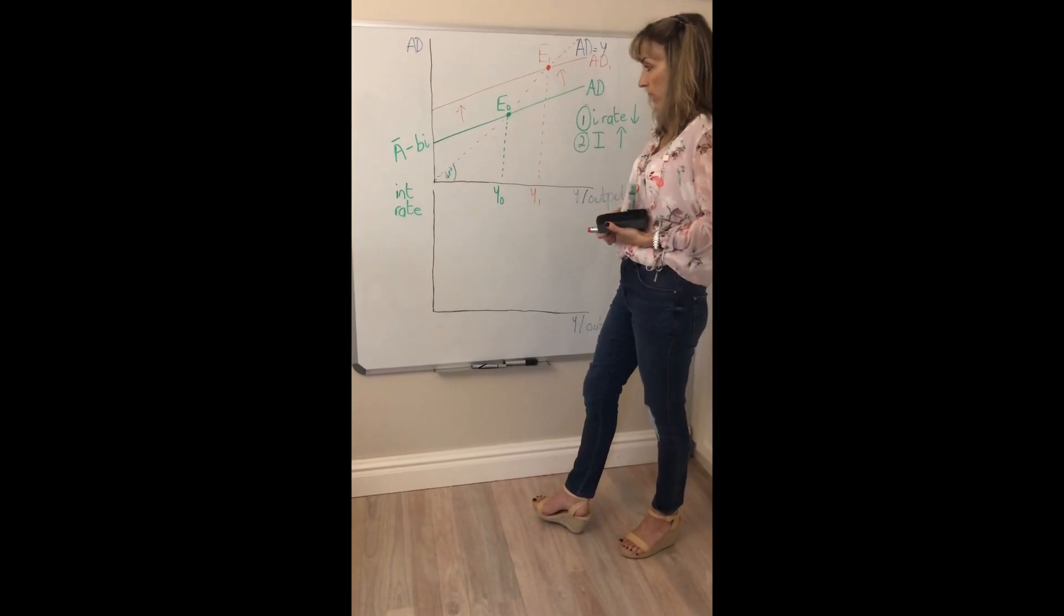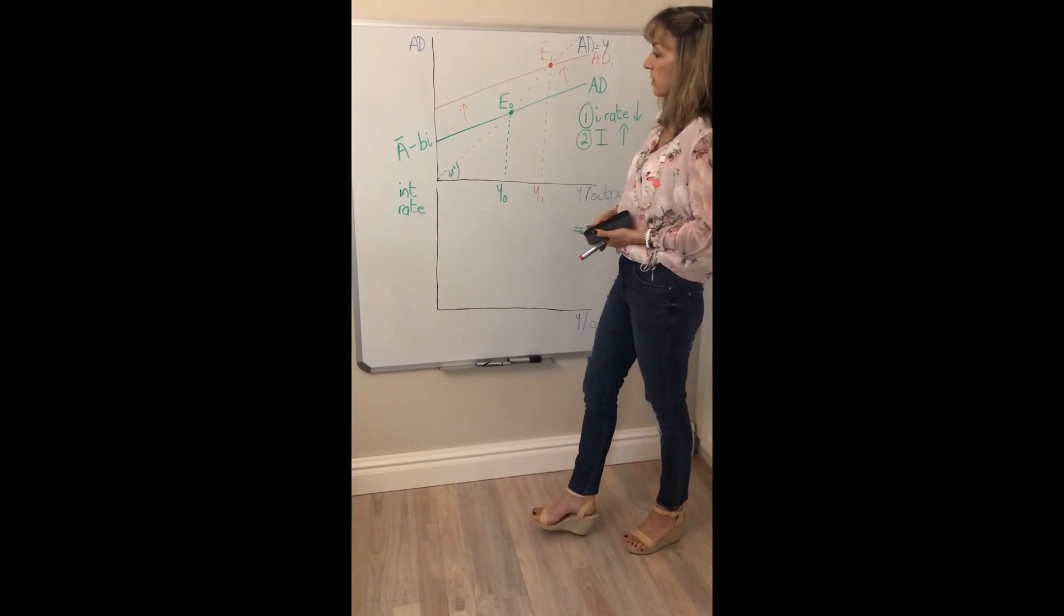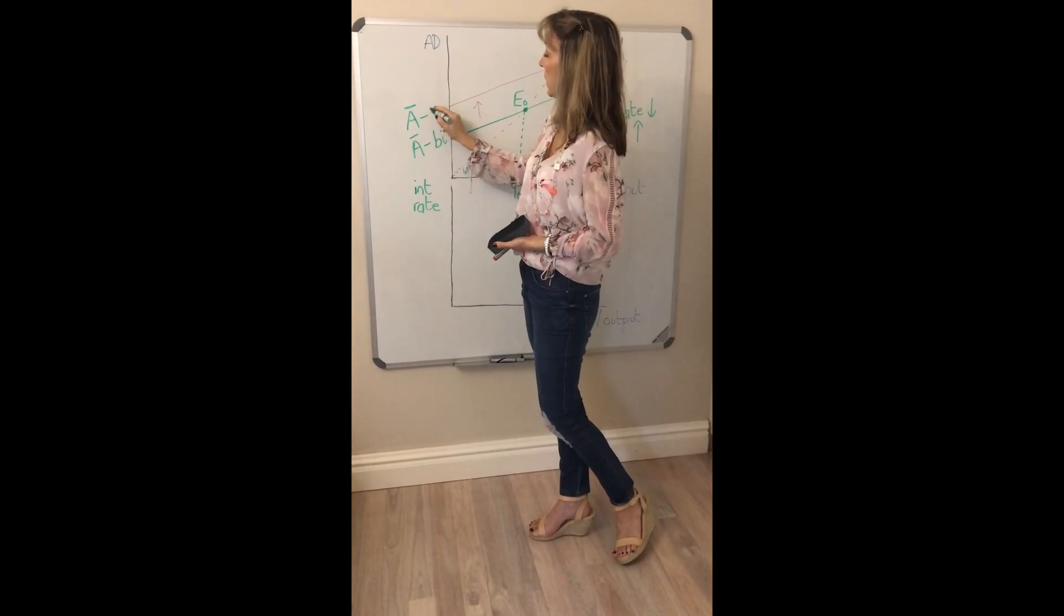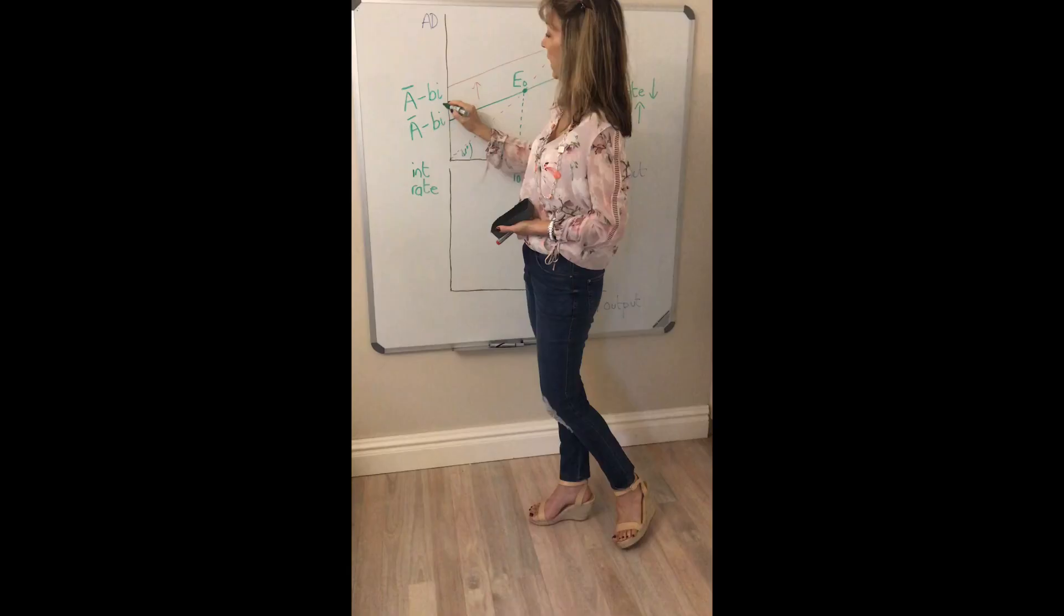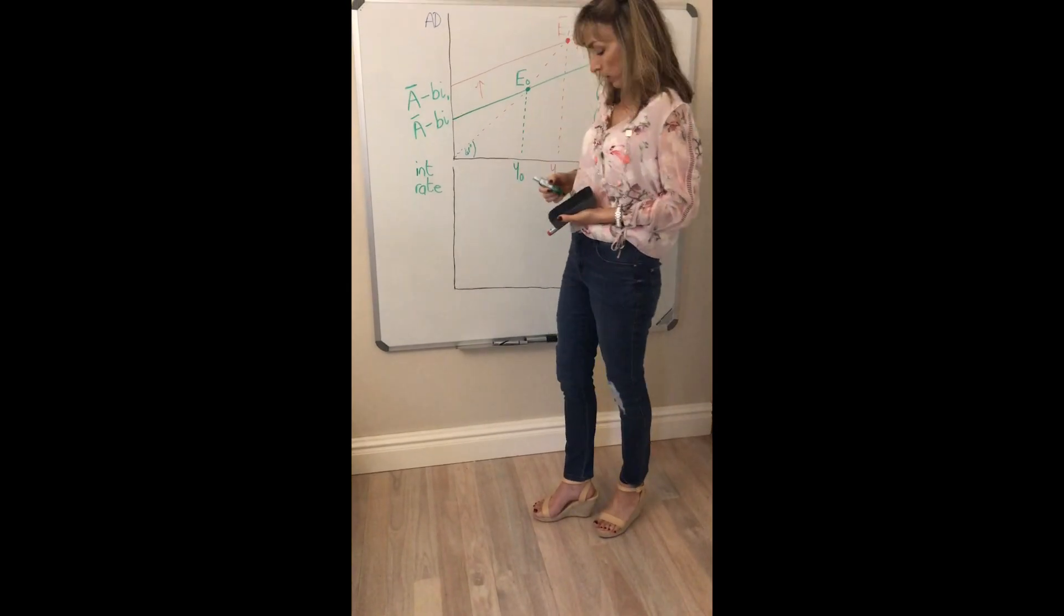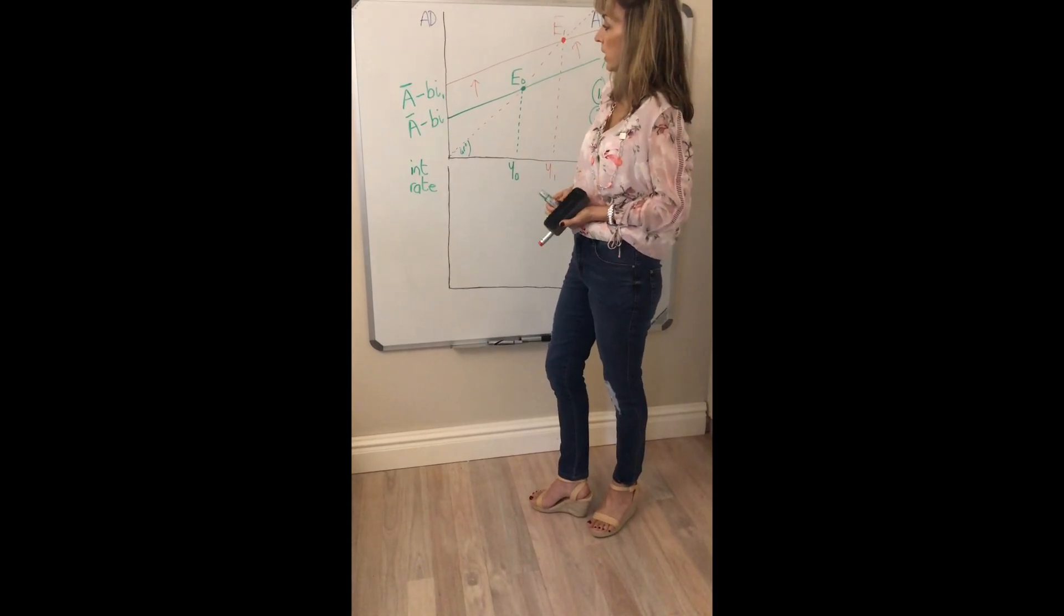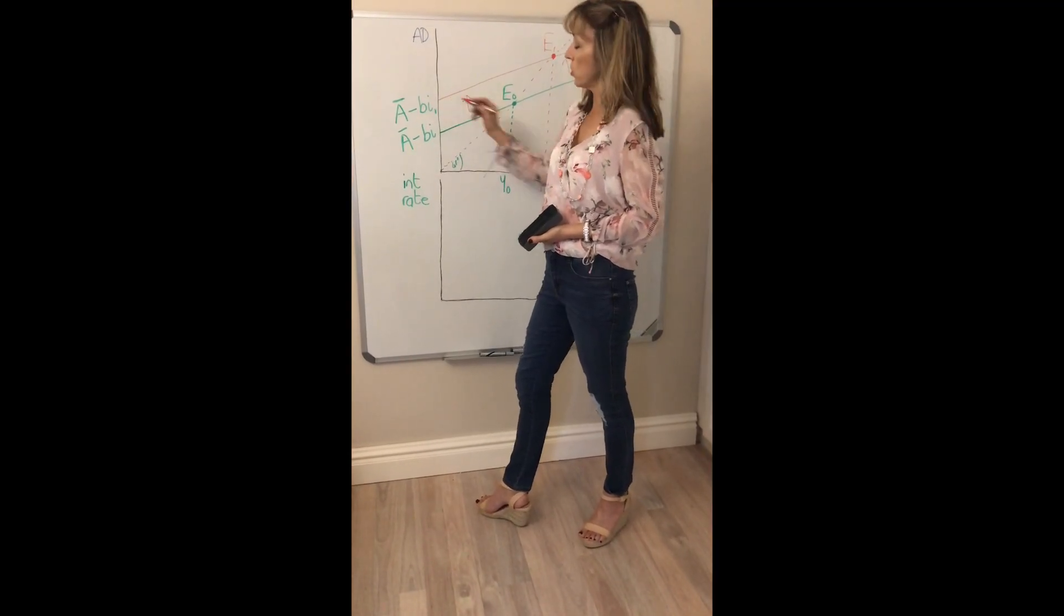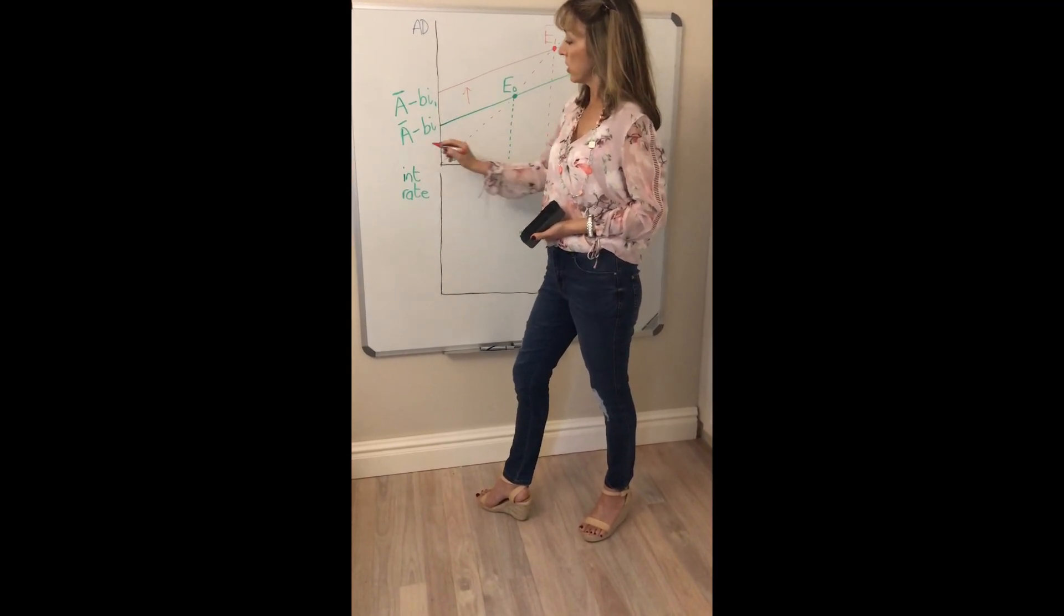Let's take a look at what's happened to our intercept. What causes the intercept to rise? We'll call this total autonomous spending minus BI1. So the only thing that has changed here is the interest rate. Let's say that initially it was 2% and now it changes to 1%.